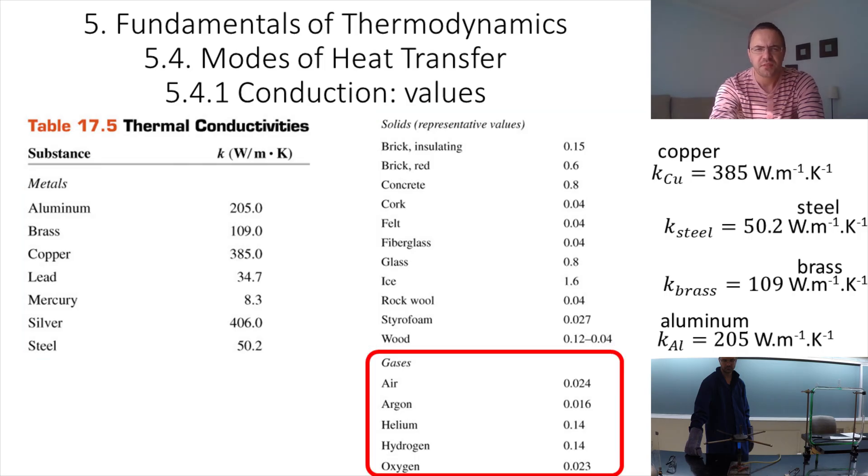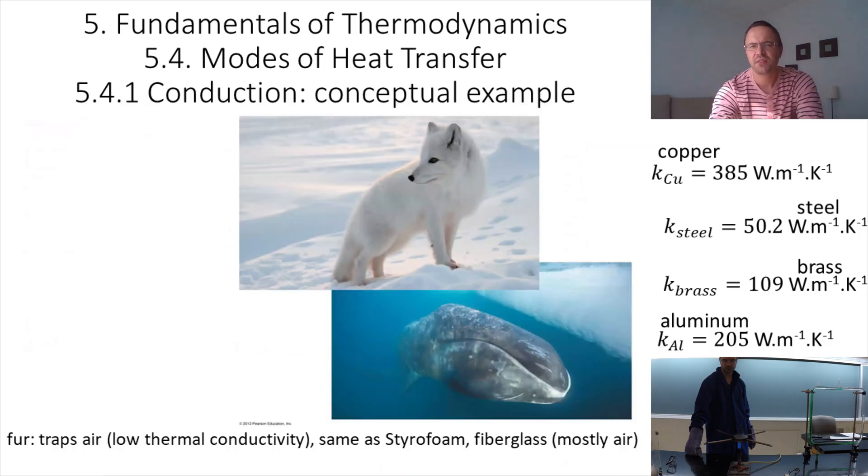You can also see from this table that gases have very low thermal conductivity. That means gases will conduct heat very slowly. That is why, for example, fur is a good thermal insulator. It will trap air which has low thermal conductivity. Styrofoam or fiberglass also are materials that trap air and have very low thermal conductivity.